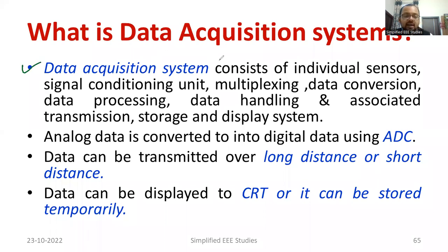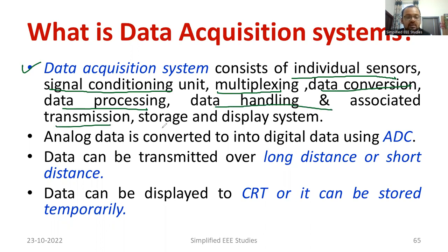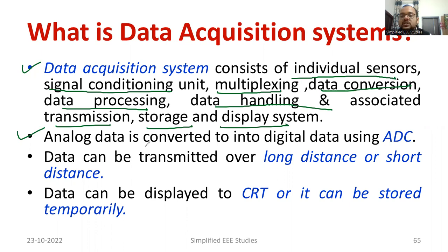You can define the data acquisition system as comprising individual sensors or transducers, thereafter signal conditioning device units, then multiplexing units, data conversion — ADC or DAC — data processing, data handling and associated transmission, a storage system, and finally a display system. The entire system is called the data acquisition system, and it is very essential for all types of measurement systems. Analog data is converted into digital data by using an analog to digital converter, also known as ADC. Data can also be transmitted over a long or short distance, and displayed using LCD, LED, CRT monitor, or DSO — digital storage oscilloscope.